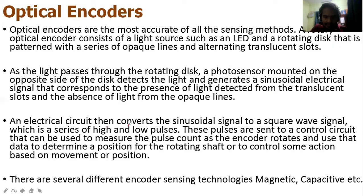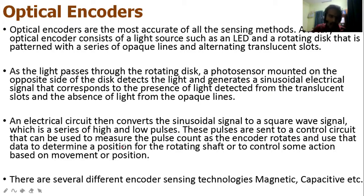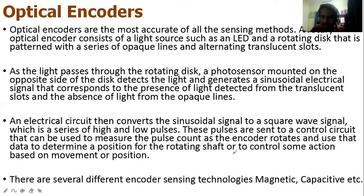An electrical circuit then converts the sinusoidal signal to a square wave signal, which is a series of high and low pulses. These pulses are sent to a control unit that measures the pulse count as the encoder rotates, and uses that data to determine the position of the rotating shaft or to control action based on movement and position.